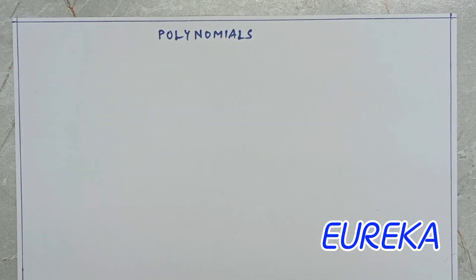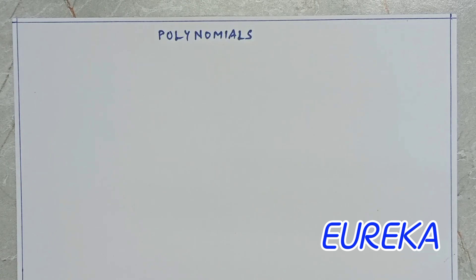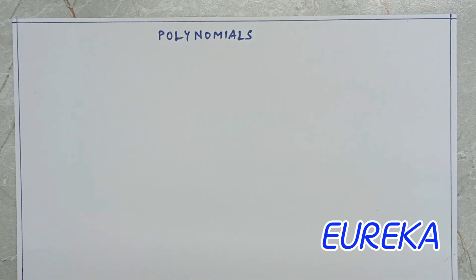In this part we are going to discuss about the types of polynomials depending on their degree. Now degree also you know very well, but let's revise the concept as we are starting with it. I will try to cover almost all the concepts related to it, but still if you feel something is not clear, you can always comment. Your comments and feedback are really welcomed.